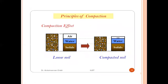The compaction effect is illustrated using loose soil and compacted soil phase diagrams. In loose soil, there are three phases: solids, water, and air. In the compacted soil phase diagram, solids, water, and air are also present, but the solids and water portions remain the same while the air portion is decreased in compacted soils.